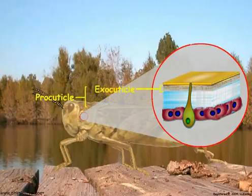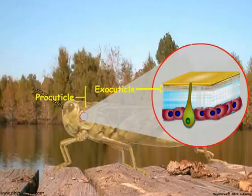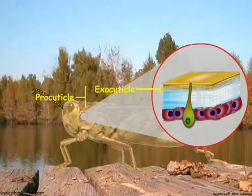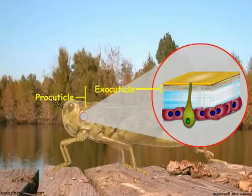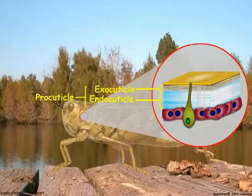Above the endo-cuticle is the exo-cuticle, the layer that gives the cuticle its hardness and rigidity. The exo-cuticle becomes hard and rigid because it undergoes sclerotization, or tanning. Sclerotization is the cross-linking of proteins by quinones derived from polyphenols. It makes the exo-cuticle hard, strong, and insoluble, so it is resistant to chemicals and mechanical damage and has low water permeability. Sclerotization differentiates the original procuticle into the endo- and exo-cuticles.